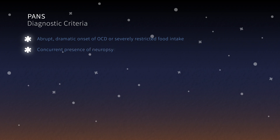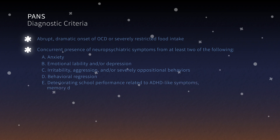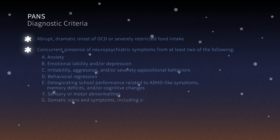Criterion 2: concurrent presence of neuropsychiatric symptoms from at least two of the following categories: A. Anxiety. B. Emotional lability and/or depression. C. Irritability, aggression, and/or severely oppositional behaviors. D. Behavioral regression. E. Deteriorating school performance related to ADHD-like symptoms, memory deficits, and/or cognitive changes. F. Sensory or motor abnormalities. G. Somatic signs and symptoms, including sleep disturbances, enuresis, or urinary frequency.